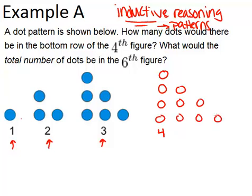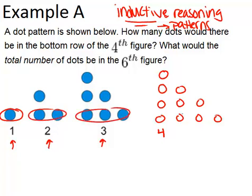So it looks like basically the number of circles in the bottom row always corresponds to the figure number. So the third figure had three circles in the bottom row, and the answer to this question, in the fourth figure, there would be four dots in the bottom row.